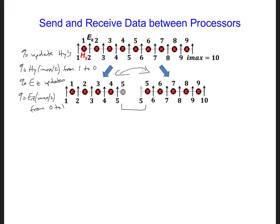Here is an example of how we would send the EZ iMax over 2 value, so this step right here, from processor 0 to processor 1. We only want processor 0 to send this EZ value, so we're going to have an if statement.